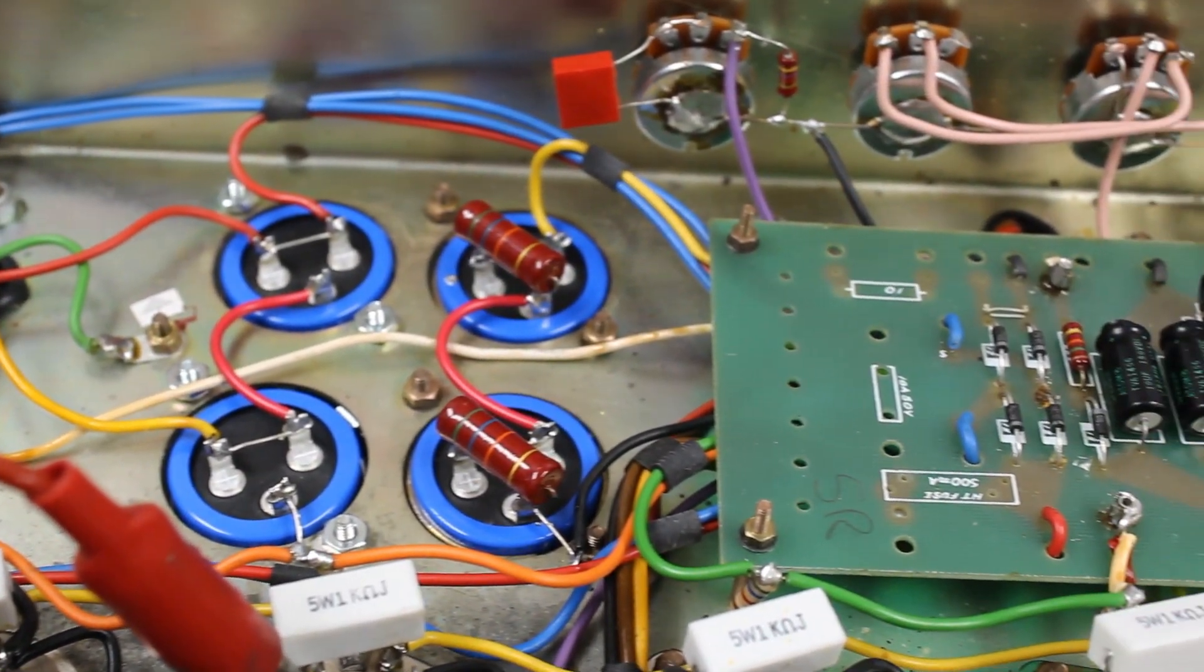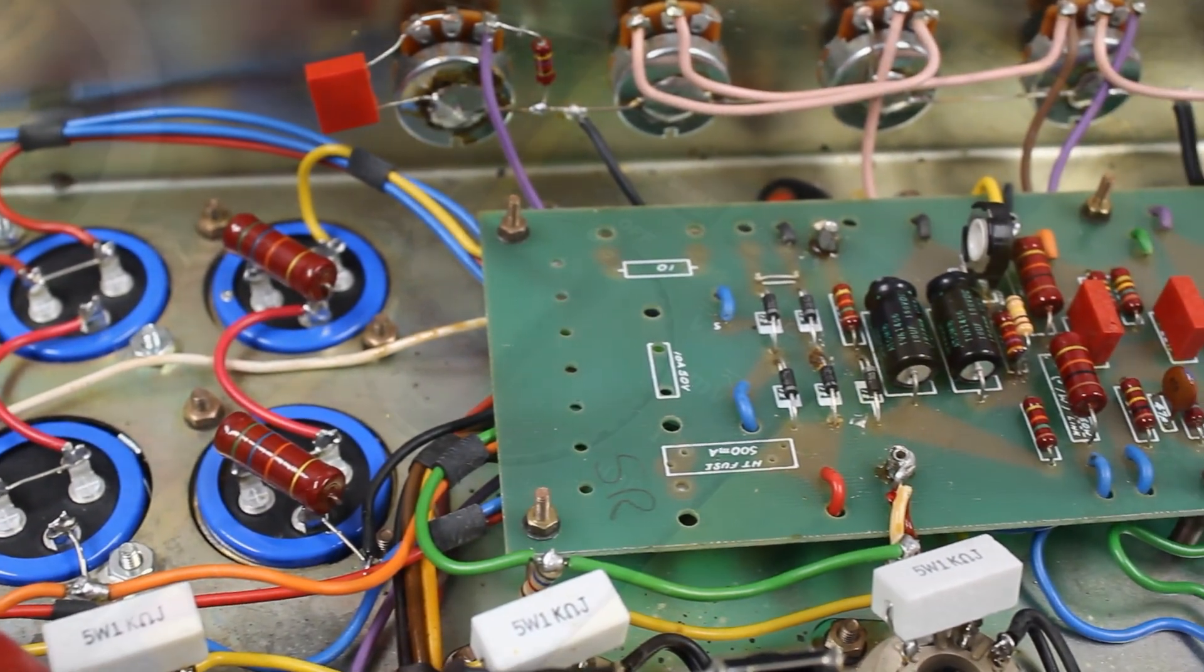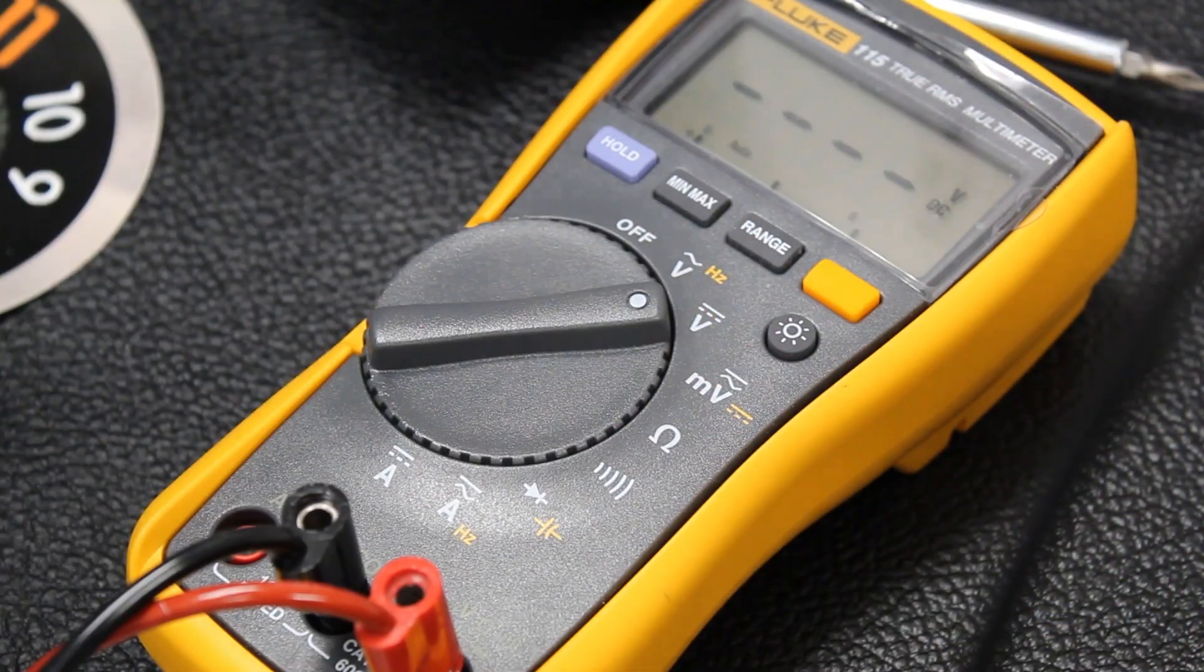In many cases, you can just clip it to the chassis of the amp. Turn on your multimeter and set it to DC voltage.